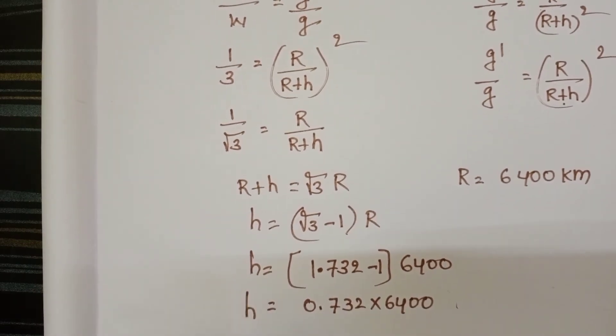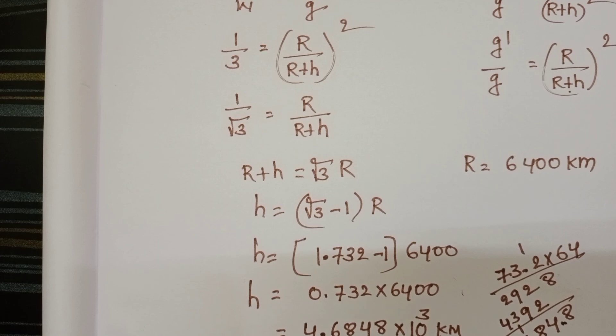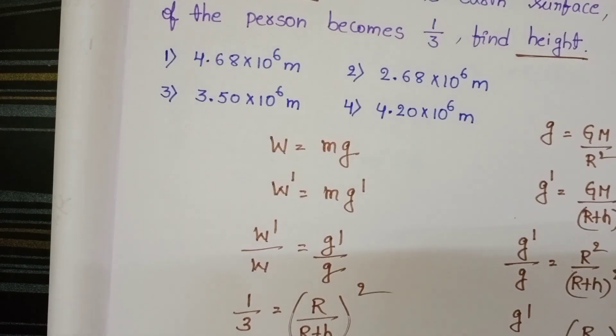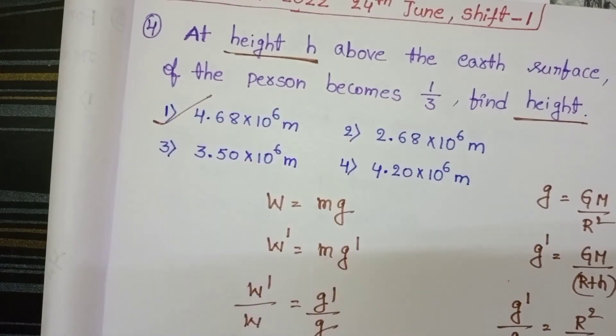Multiply this value. Height equals 4.68 times 10 power 6 meters. Check the given options. First option is correct.